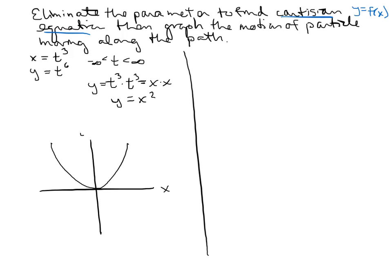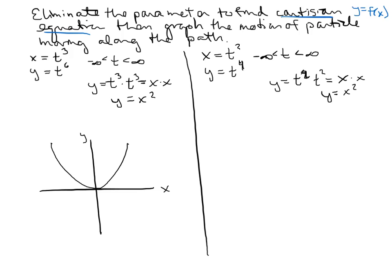So we get this parabola. Now the next example: set x equal to t squared and y equal to t to the fourth, where t goes from negative infinity to infinity. Eliminating the parameter: y equals t squared times t squared, and t squared equals x, so we once again get y equals x squared. Notice we got y equals x squared from two different parametrizations — there are infinitely many parametrizations for a single curve, and you may get something different from your friend and both still be correct.